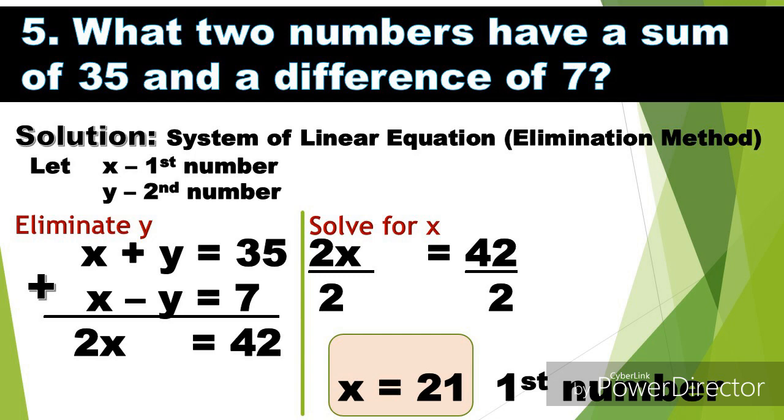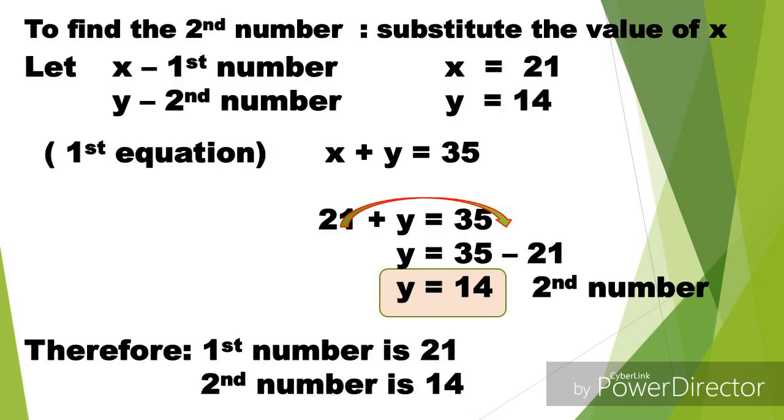Then we have new equation now: 2x equals 42. Ang nating gagawin is to solve for x. We have 2x equals 42, and then we're going to divide both sides by 2. Para 2 divided by 2 is 1, or we can cancel 2. Then we have x now: 42 divided by 2 equals 21. So the value of x is 21, which is the first number.